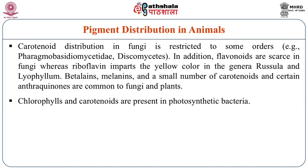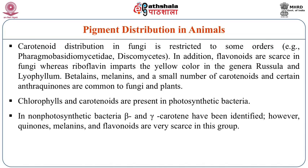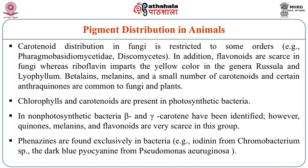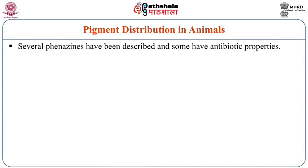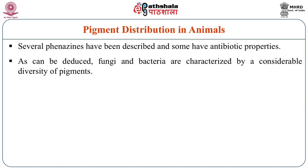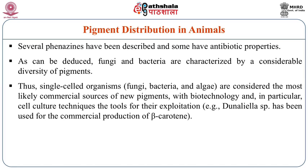Chlorophylls and carotenoids are present in photosynthetic bacteria. In non-photosynthetic bacteria, beta and gamma carotene have been identified; however, quinones, melanins, and flavonoids are very scarce in this group. Phenazines are found exclusively in bacteria and they are also present in dark blue procyanin forms. Several phenazines have been described and some of them even have antibiotic properties apart from their pigment role. Fungi and bacteria are characterized by considerable diversity of pigments. Therefore, single-cell organisms like fungi, bacteria, and algae are considered the most likely commercial source of new pigments, with biotechnology and cell culture techniques as the tools for their exploitation in various food applications.